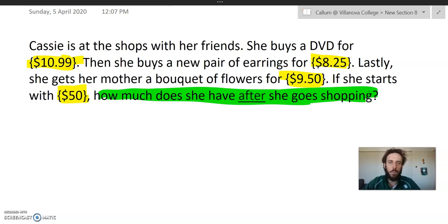So the question says, Cassie is at the shops with her friends. She buys a DVD for $10.99. Remember when we could go to the shops? They were good times. Then she buys a new pair of earrings for $8.25. They're either cheap earrings or really expensive. I've never bought earrings. Lastly, she gets her mother a bouquet of flowers for $9.50. Bouquet? Bouquet? If she starts with $50, how much does she have after she goes shopping?